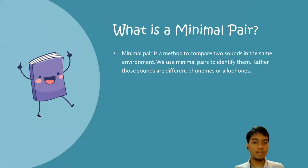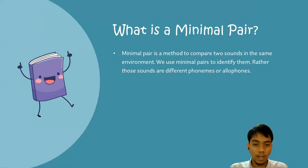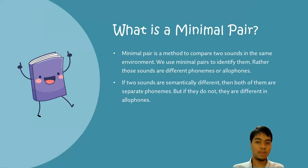Next topic is, what is a minimal pair? Minimal pair is a method to compare two sounds in the same environment. We use minimal pairs to identify whether those sounds are different phonemes or other forms. If two sounds are semantically different, then both of them are separate phonemes, but if they do not, they are different in other forms.